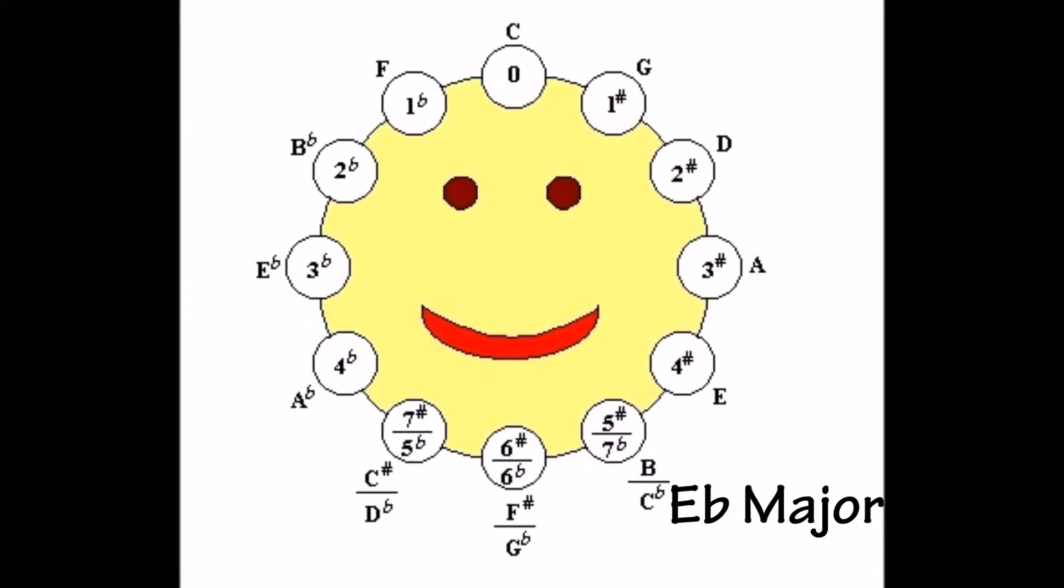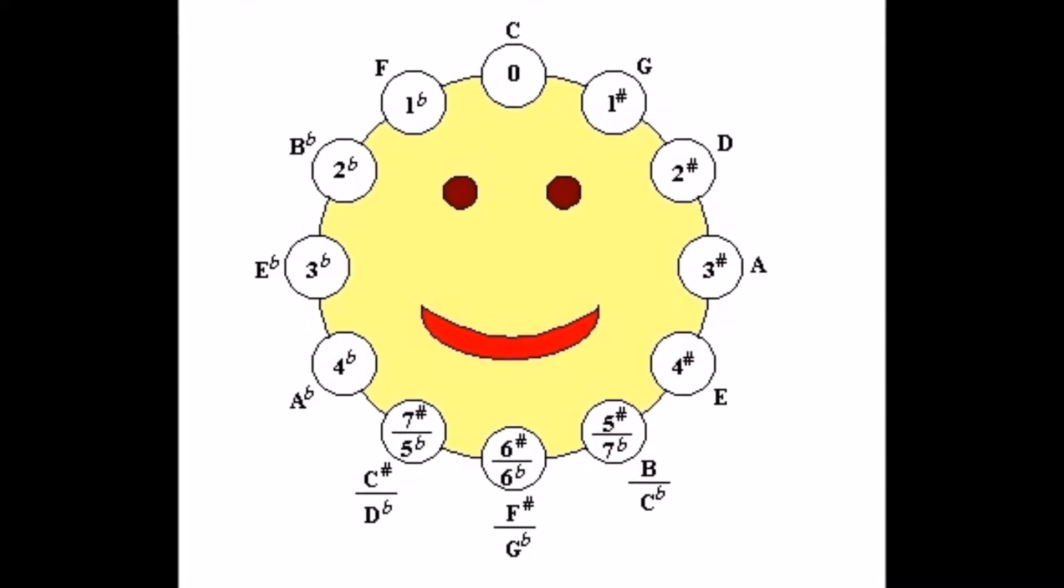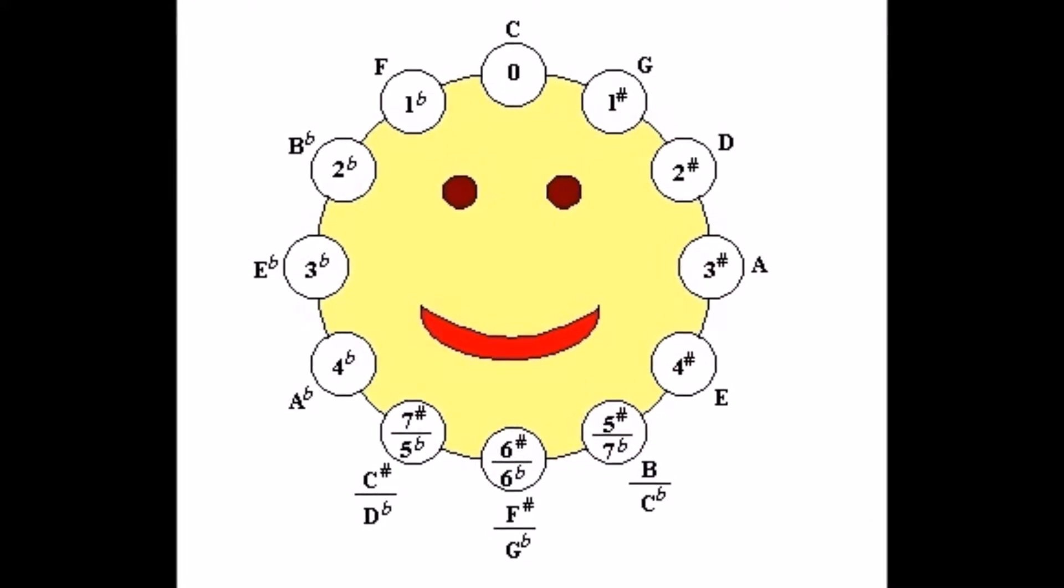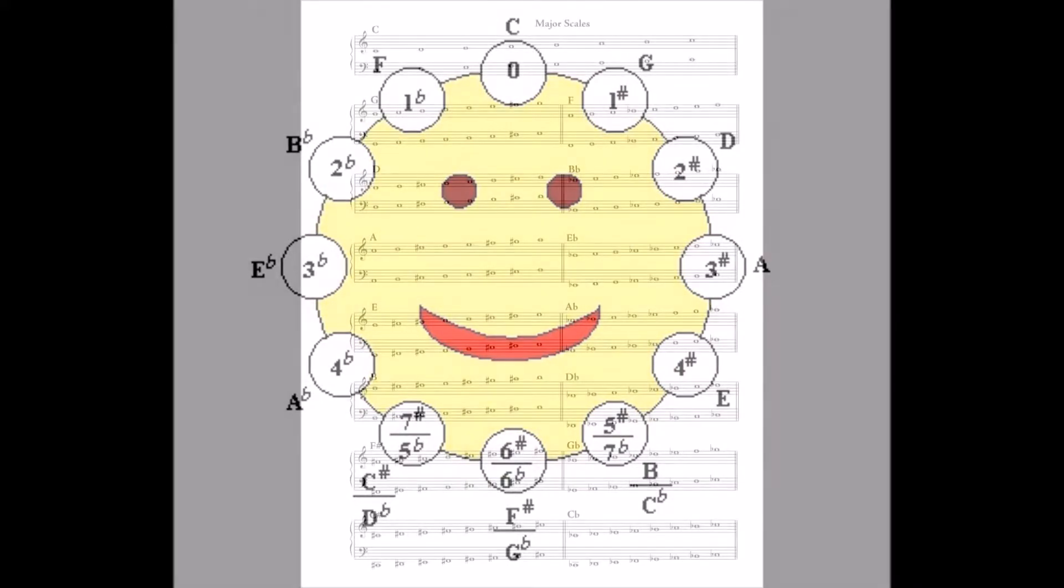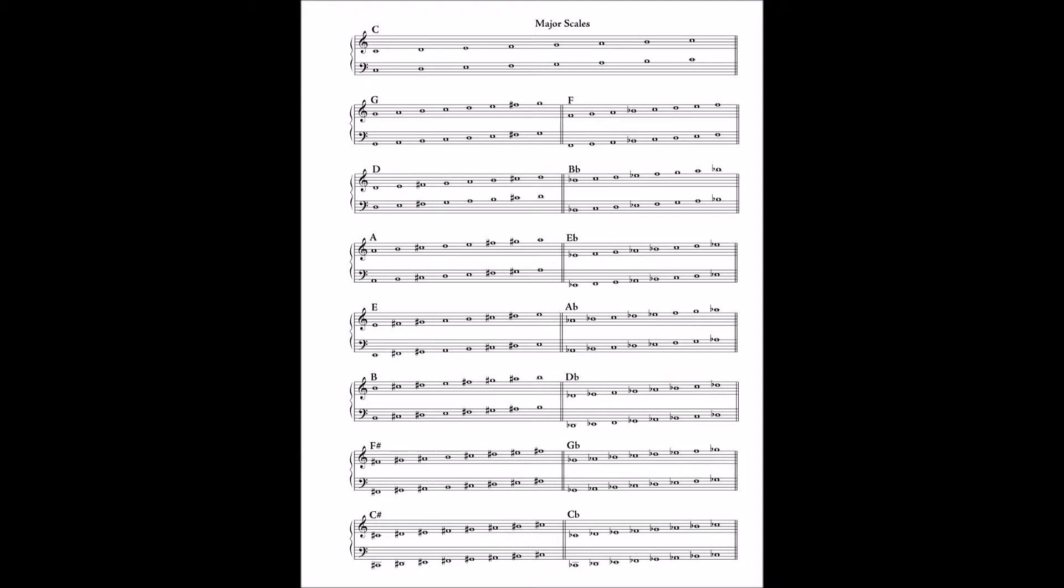So the circle of fifths is not only a helpful aid, but it gives us some insight of the fifth relationship keys have with each other. And here we see the major keys written out in all their glory with the correct sharps and flats for each scale.